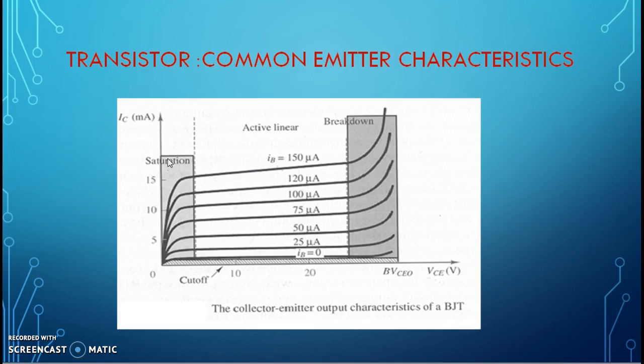If we see the output characteristics of this common emitter configuration, VCE is on the x-axis, IC is on the y-axis, and as base current changes, the current IC is also going to vary. When base current is zero, below that both the junctions are reverse biased and it is called as cut-off region.